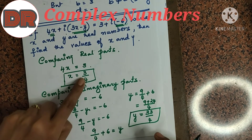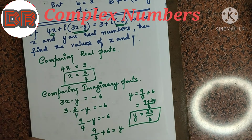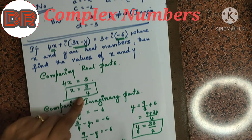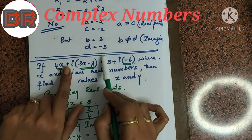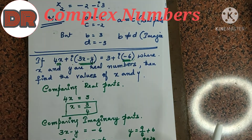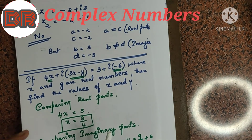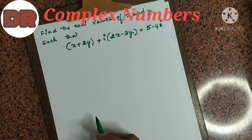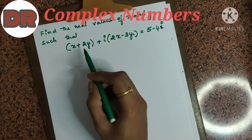So we have found x equals 3 by 4 and y equals 33 by 4 by using the condition of equality of complex numbers. If you substitute these values into the equation, you will get the same result as the RHS side. This is one more numerical based on the equality of complex numbers.